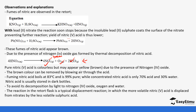The reaction in the retort flask is a typical displacement reaction in which the more volatile nitric acid is displaced from a nitrate by the less volatile sulfuric acid. Nitric acid distils over because it is more volatile than sulfuric acid — that is the reason why this reaction occurs.